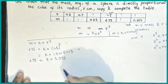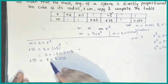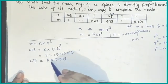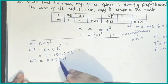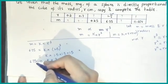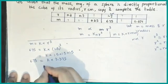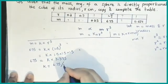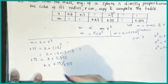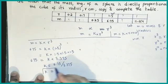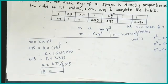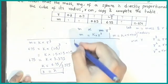Now what do I do? I remove k. I've told you before that when you have to isolate k, since 3.375 is multiplied on the right side, when it moves to the left side it becomes divided. So k equals 6.75 divided by 3.375, which gives me 2.